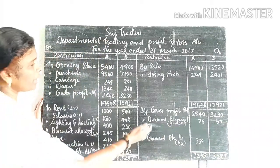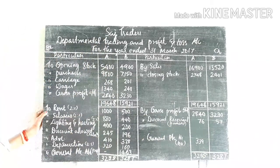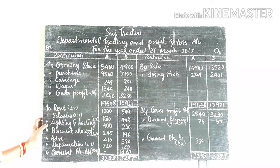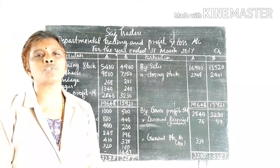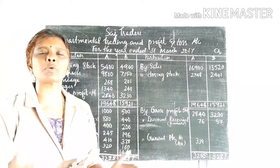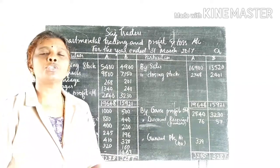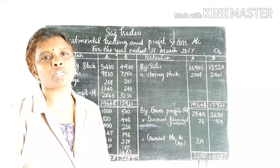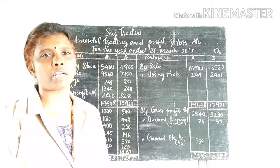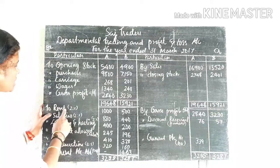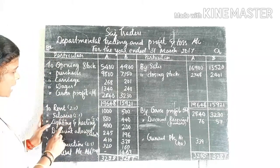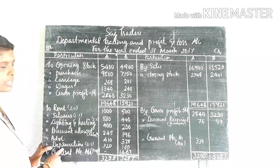On the debit side of the profit and loss account, the items are: rent, salaries, lighting and heating, and depreciation. These four items are apportioned to Department A and Department B in the ratio of 2:1, as stated in the question.